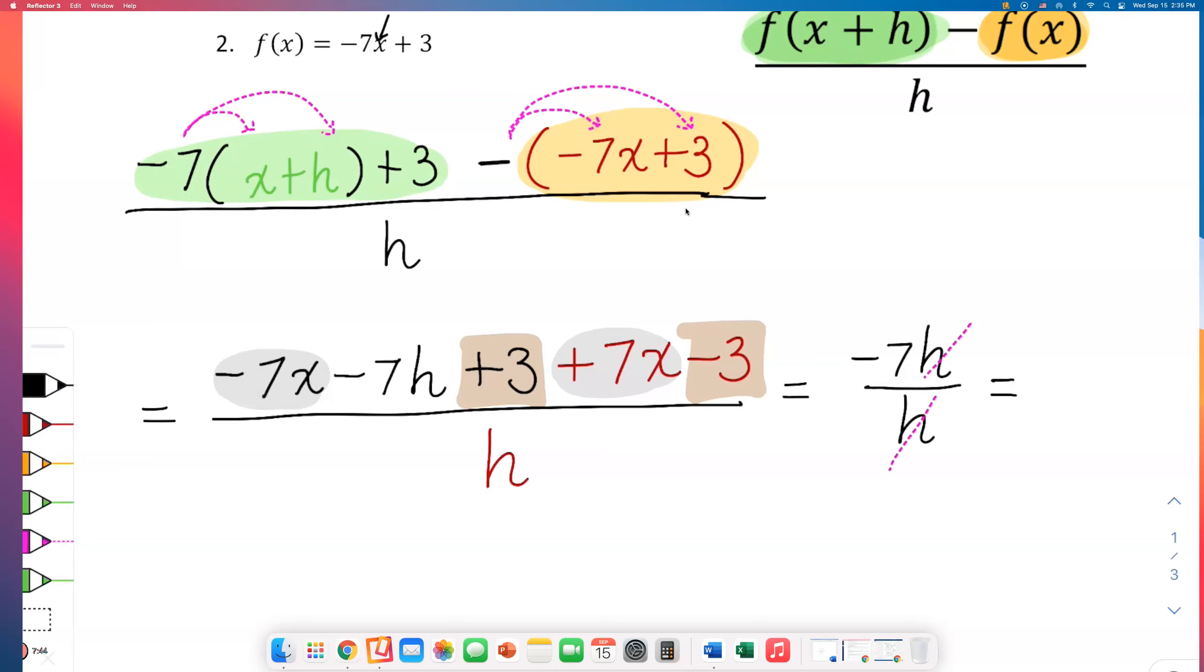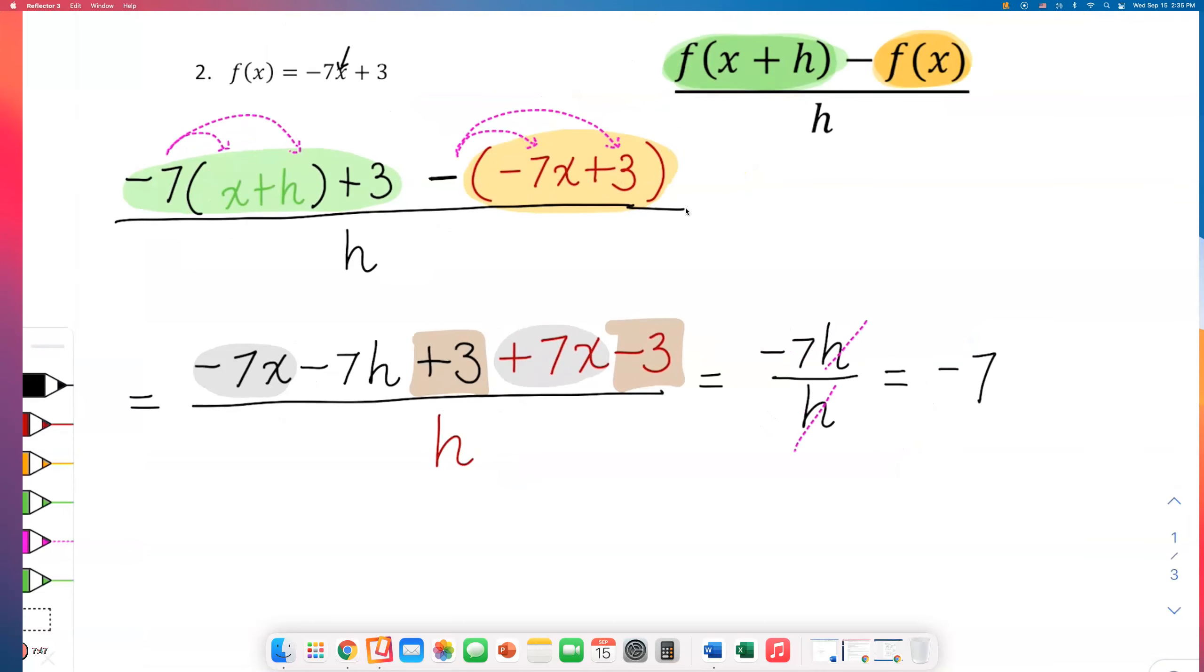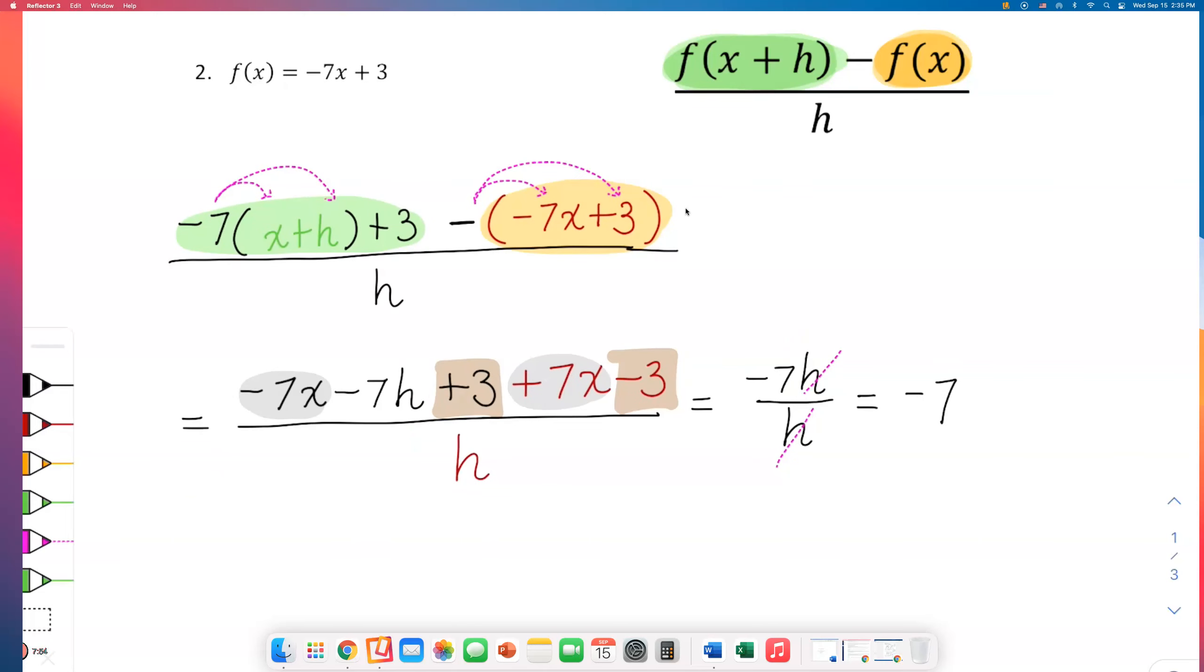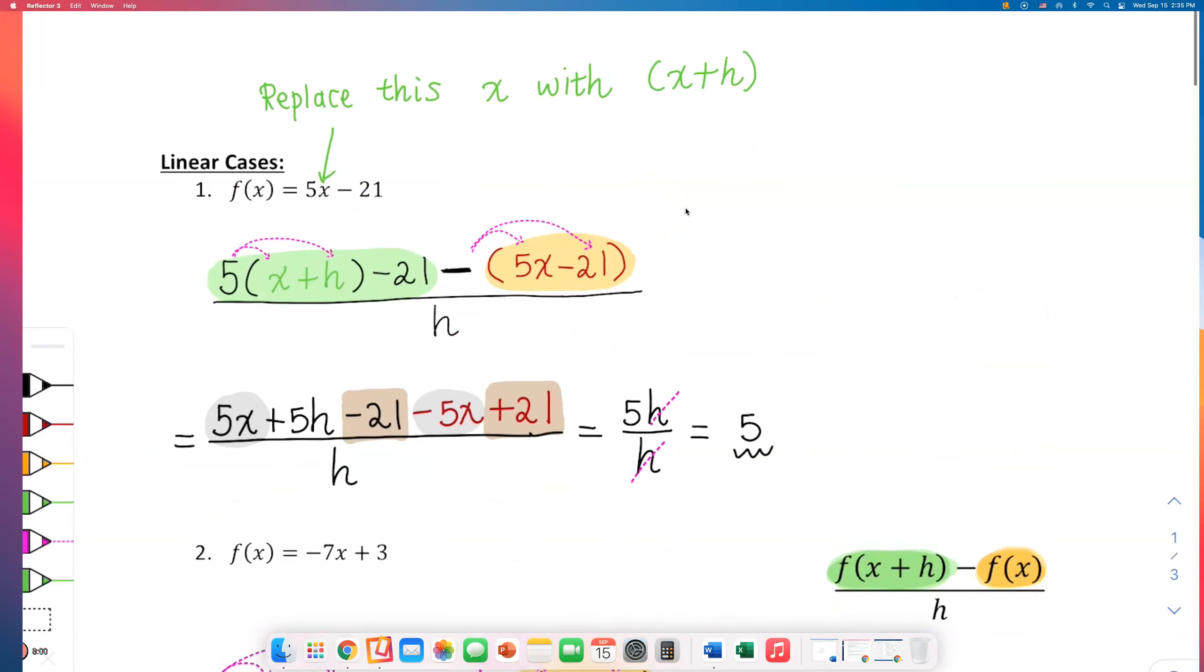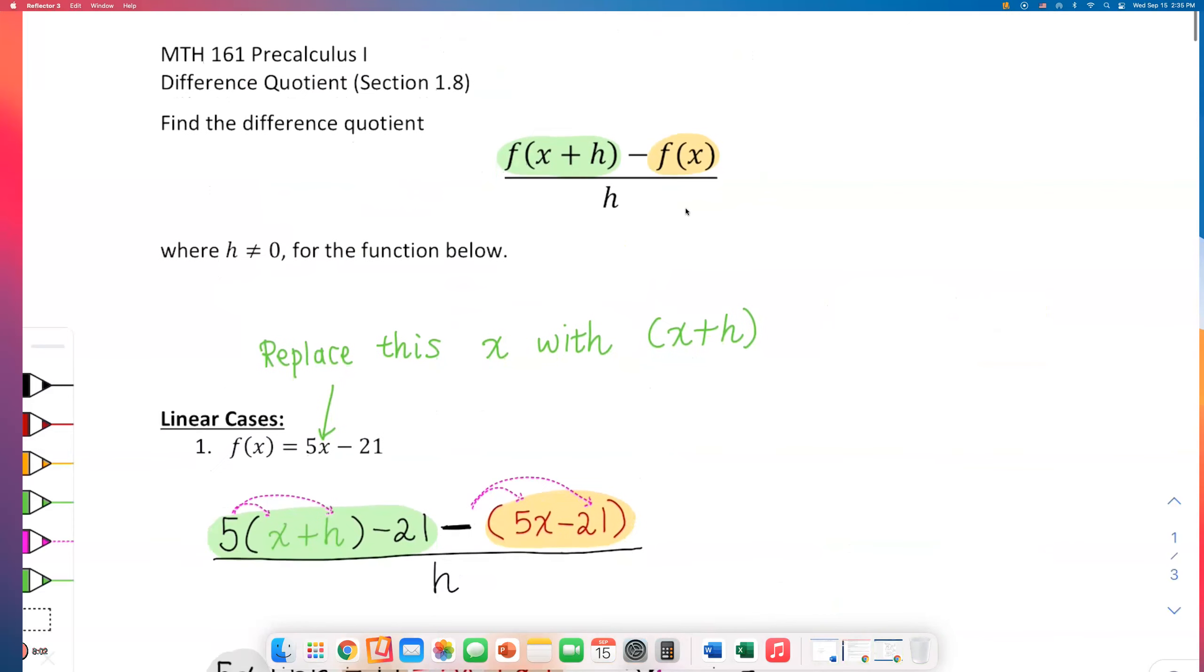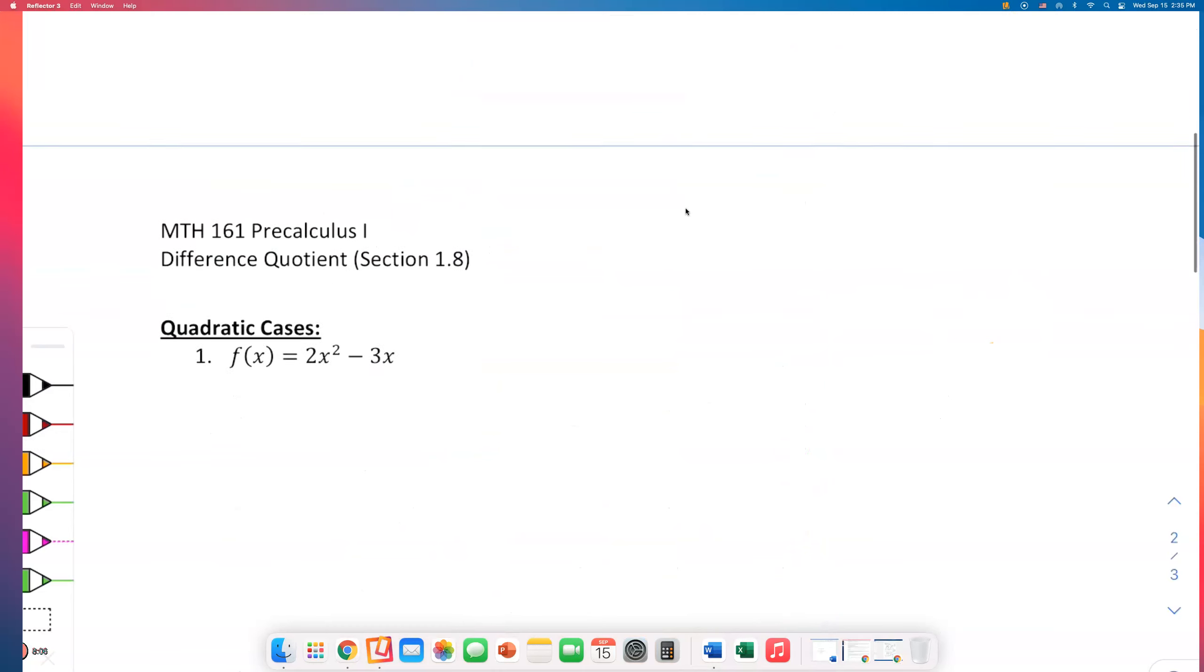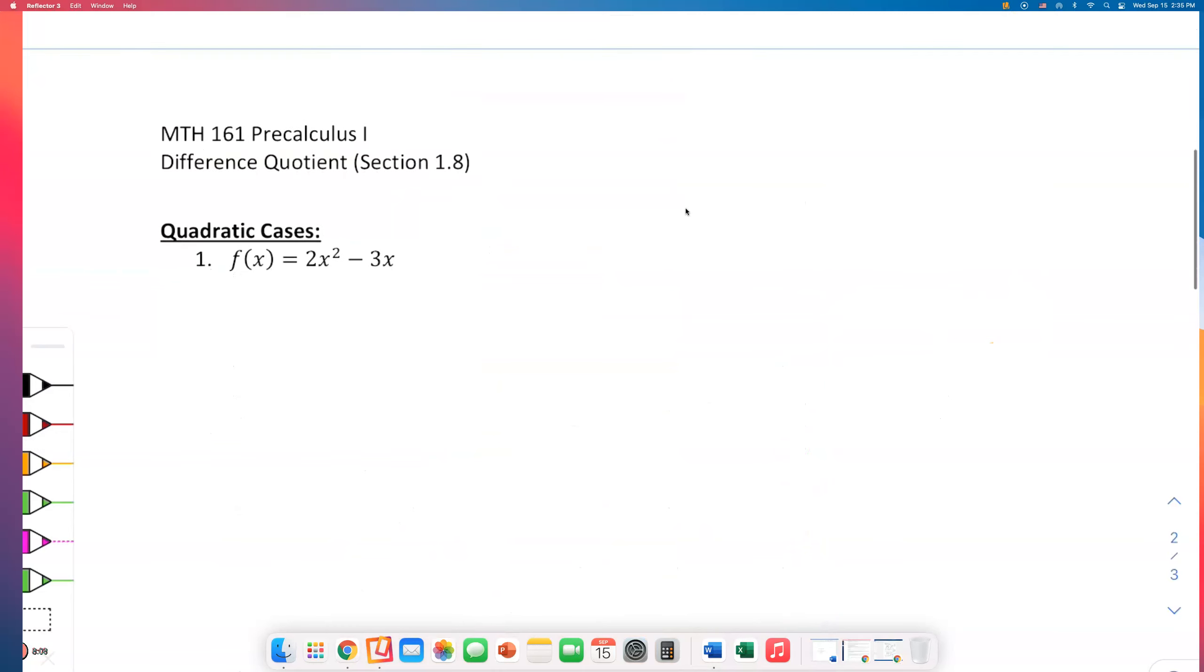Our final solution is negative 7. So linear cases - I don't think it's too complicated, but it's a great one to start with because the setting up part is difficult. In this video we looked at two examples of linear functions and how to find their simplified difference quotient. I will come back and show you how to do the quadratic cases, and quadratic case number one is very similar to what you will do for your week four problem.